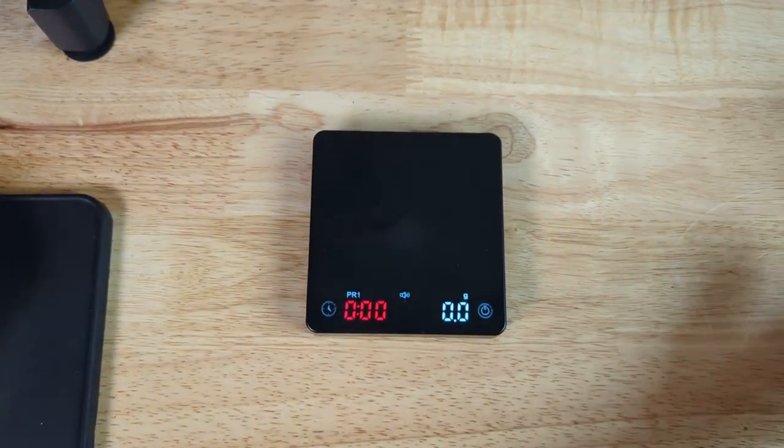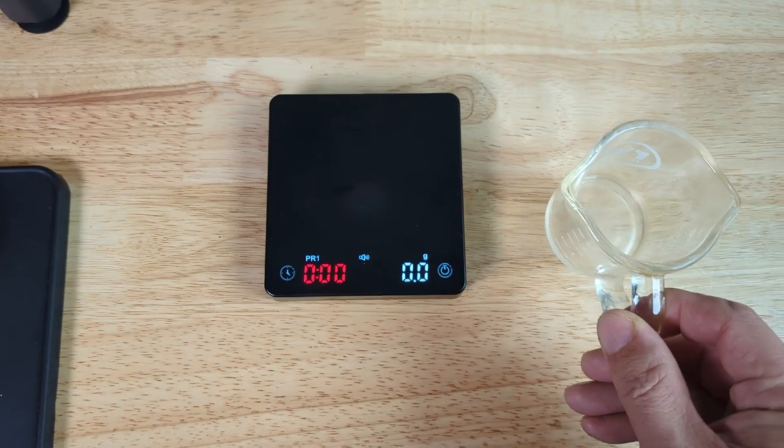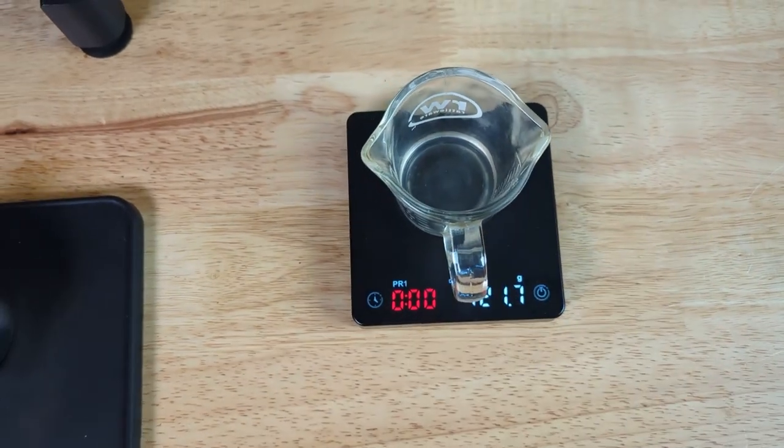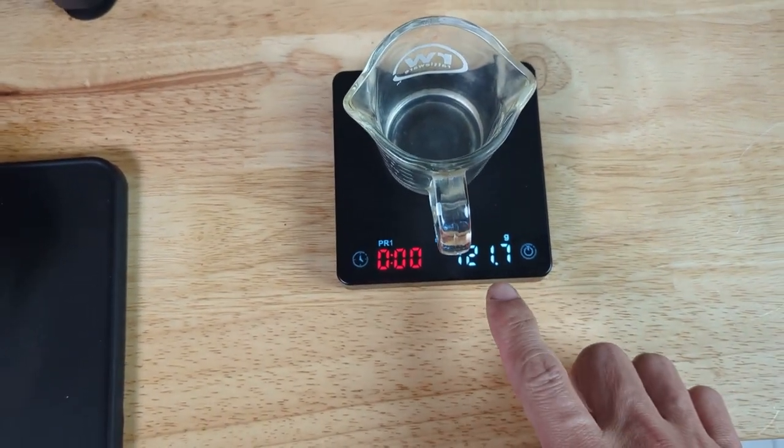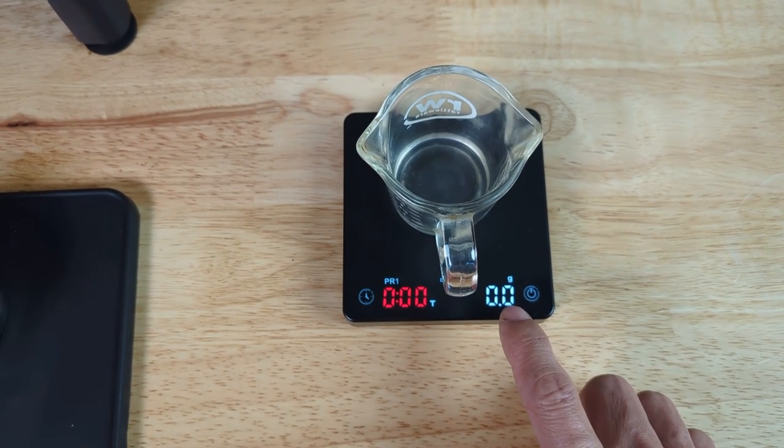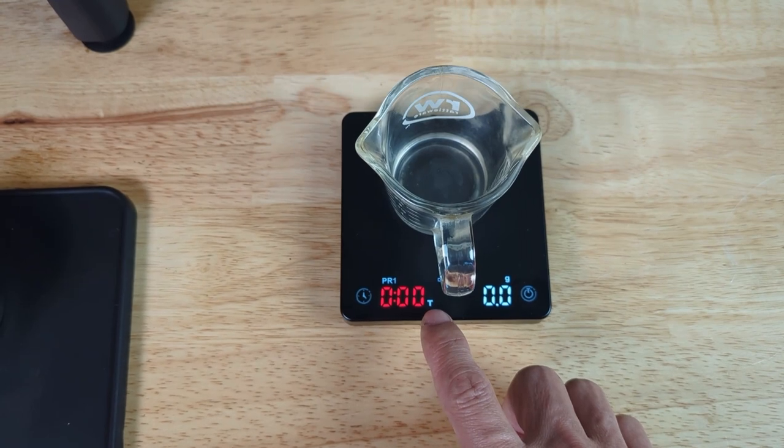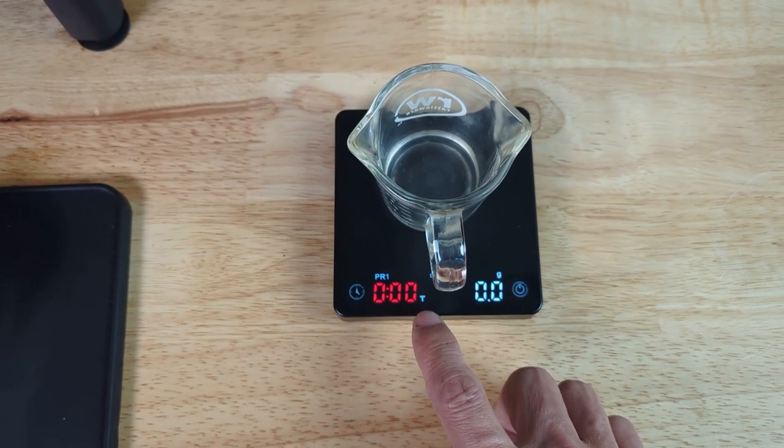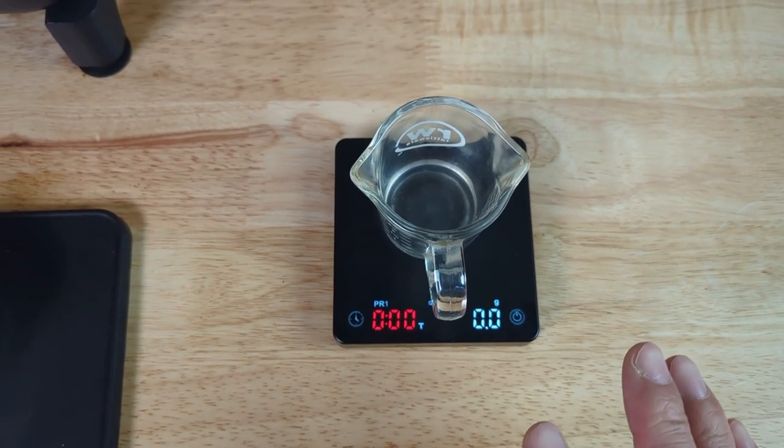And then when it's turned on, you just put a cup over. And you see there is an auto tare mode. See, it's auto cleared to zero, and there is a T mark here. Now it's ready.